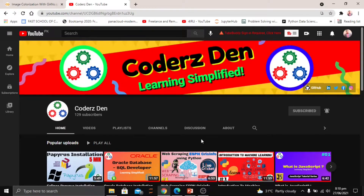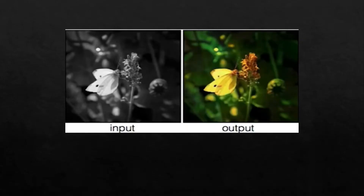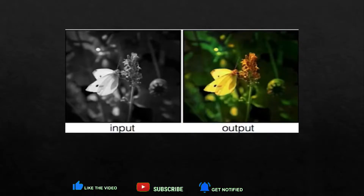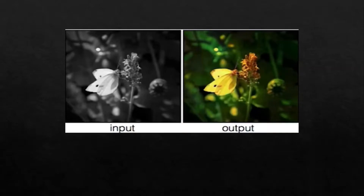Let's see how to implement this deep learning project. Generally, the input to our GAN model would be a black and white image and it is going to output a colorized image. Isn't it fantastic how our model is going to learn that a particular object needs to be colored yellow or green? Let's see how we are going to go through the entire process to make our model learn in an efficient way.